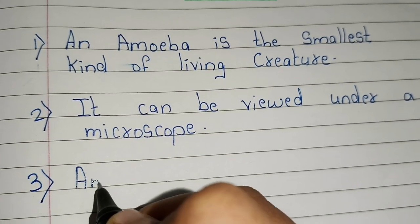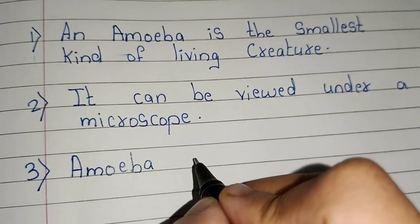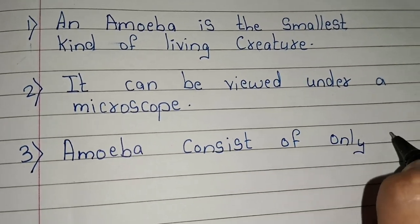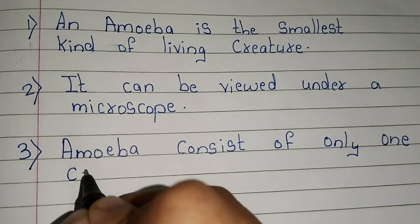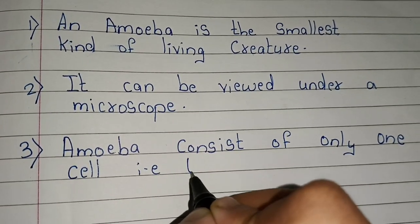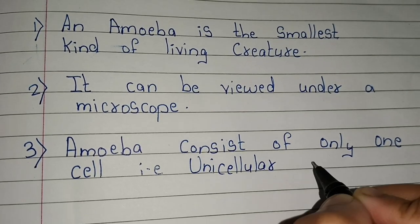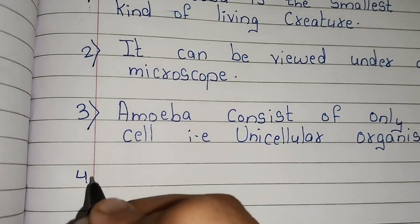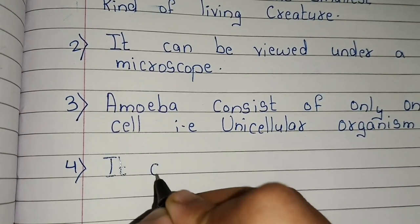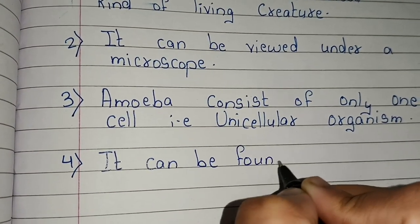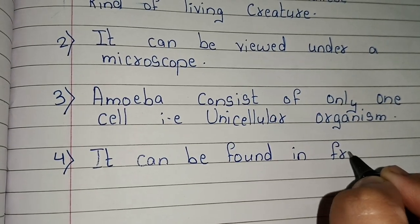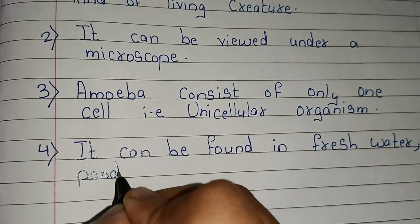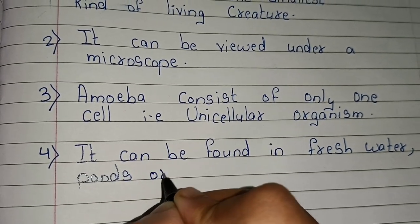Amoeba consists of only one cell — that is, it is a unicellular organism. It can be found in fresh water, ponds, river, or wet soil.